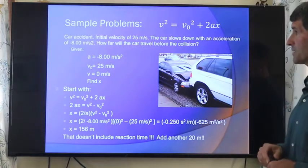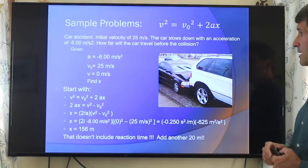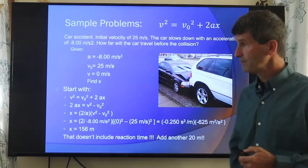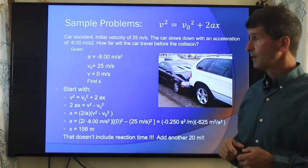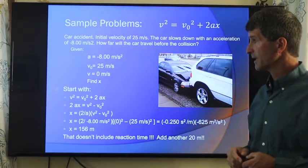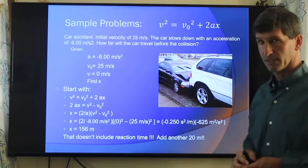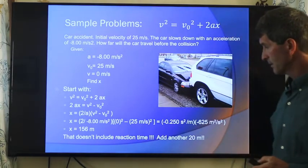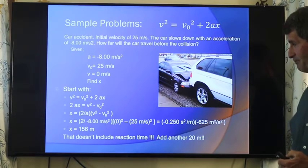Here's another one. Car accident. Initially, the velocity is 25 meters per second. The car slows down with the acceleration of negative 8 meters per second squared. How far will the car travel before the collision? Here's our acceleration. That's our brakes. Our brakes can slow us down by about 8 meters per second squared. We're traveling at 25 meters per second. Finally, we come to rest at 0 meters per second. How far do we travel? Well, we can only travel 156 meters before we stop.